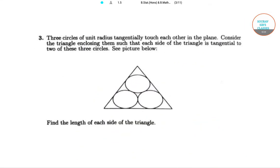In our next question, we have three circles of unit length that are touching each other and these circles are enclosed in a triangle such that each side of a triangle is tangent to two of the three circles. So this would be similar to this diagram.